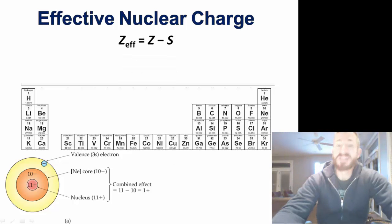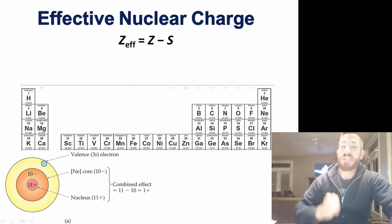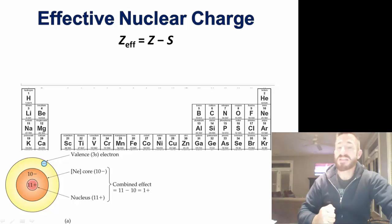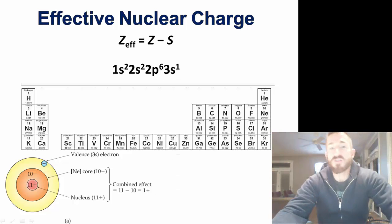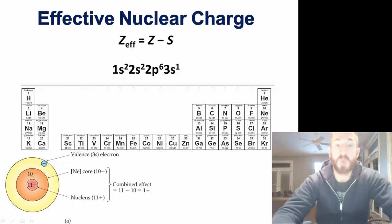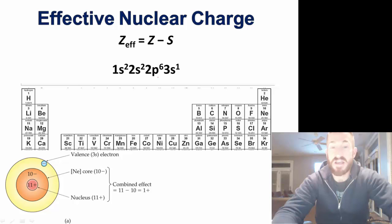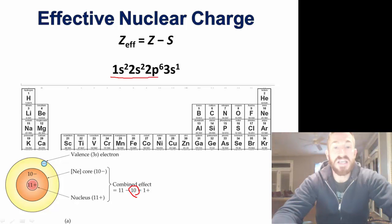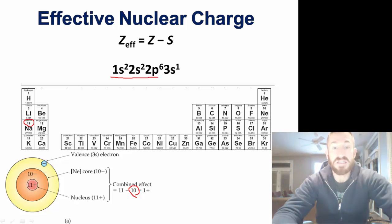Let's do some more examples. Z effective — the charge the electron actually feels — equals the number of protons minus the shielding or core electrons. To help understand this formula, let's look at the electron configuration. Sodium is 1s2, 2s2, 2p6, 3s1. The shielding or core electrons for sodium would be the 2 plus 2 plus 6, giving us 10 shielding electrons. Sodium has 11 protons, so 11 minus 10 gives us an effective nuclear charge of plus one.